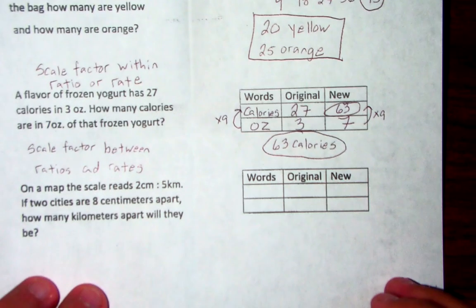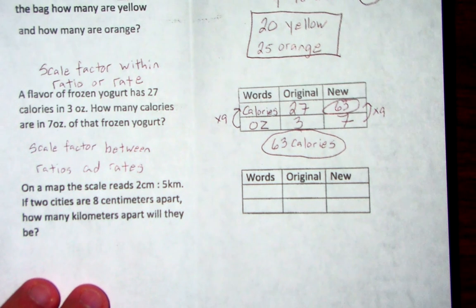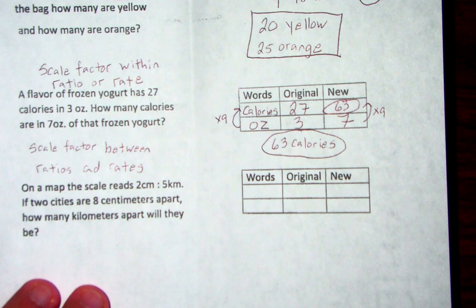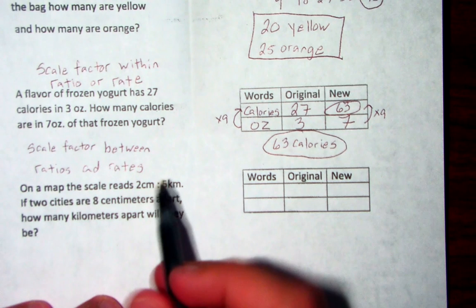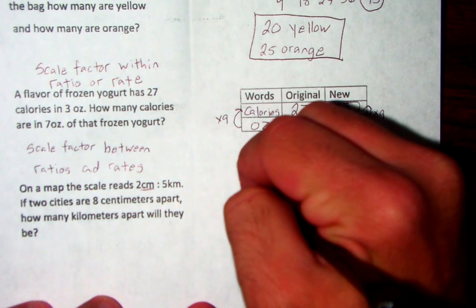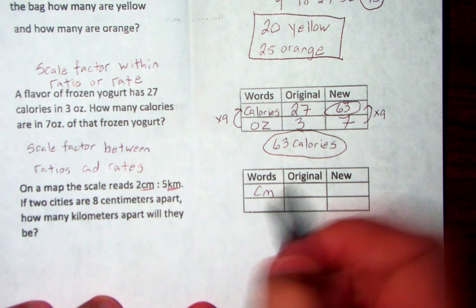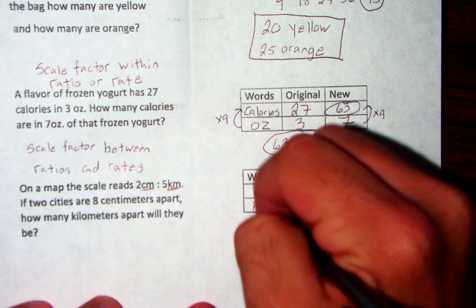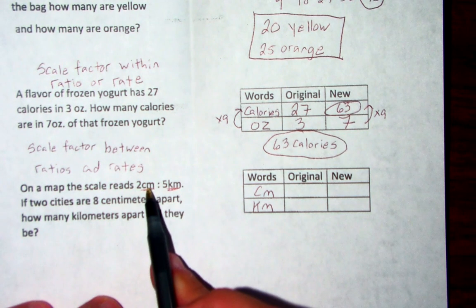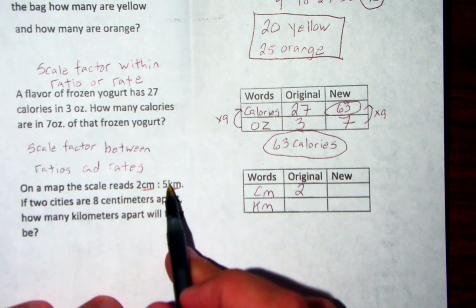Alright, so here we go. Now number three, on a map the scale reads 2 centimeters to 5 kilometers. If two cities are 8 centimeters apart, how many kilometers apart will they be? So if you notice, centimeters goes first, it goes on top. Kilometers came second, it goes on bottom. It tells us for every 2 centimeters it is 5 kilometers.